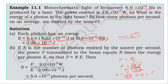The formula: number of photons per second is equal to power of the source divided by energy of a single photon. Power from the question is 2×10⁻³ watt. Substituting energy of single photon as 3.98×10⁻¹⁹ joule.